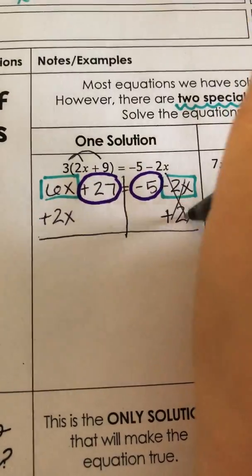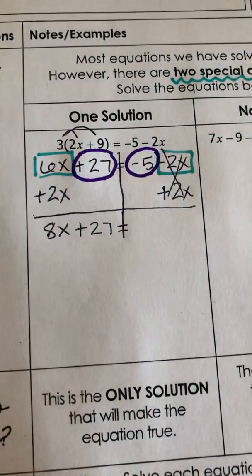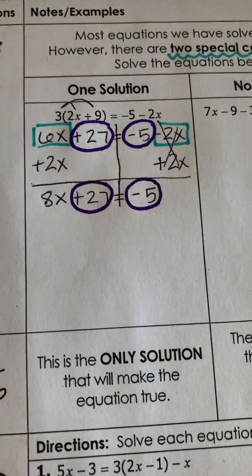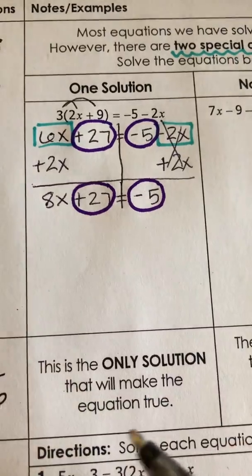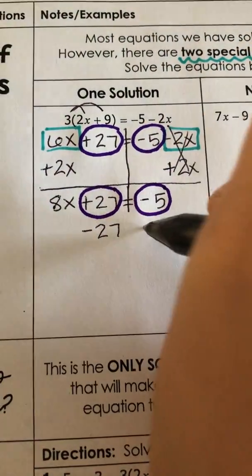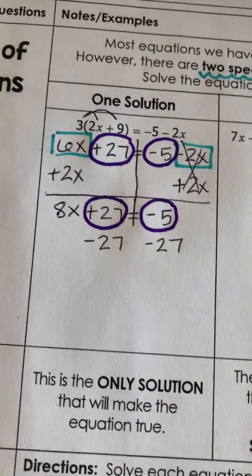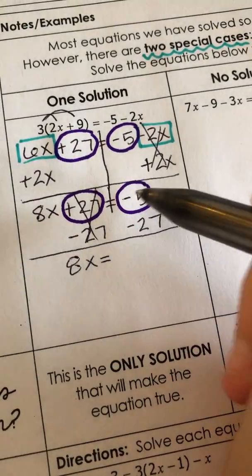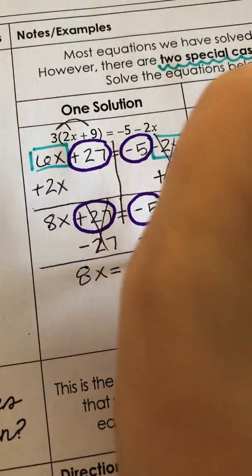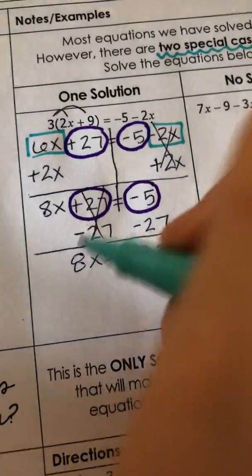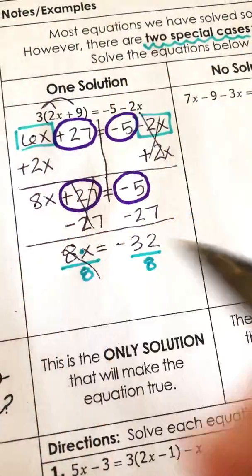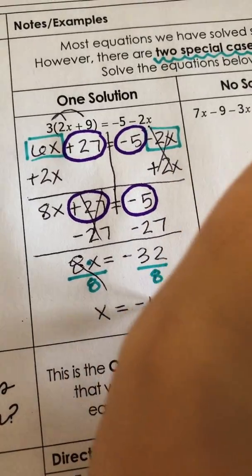Those cancel because they make zero. 6x plus 2x is 8x, and I still have plus 27 on the left and negative 5 on the right. Now I need to move the plus 27 away from my variable, so I do the inverse operation — subtraction — on both sides. Those cancel because they make zero, and I'm left with 8x equals negative 5 minus 27, which is negative 32. Since 8 is being multiplied by x, I divide both sides by 8, the 8s cancel, and x equals negative 4.